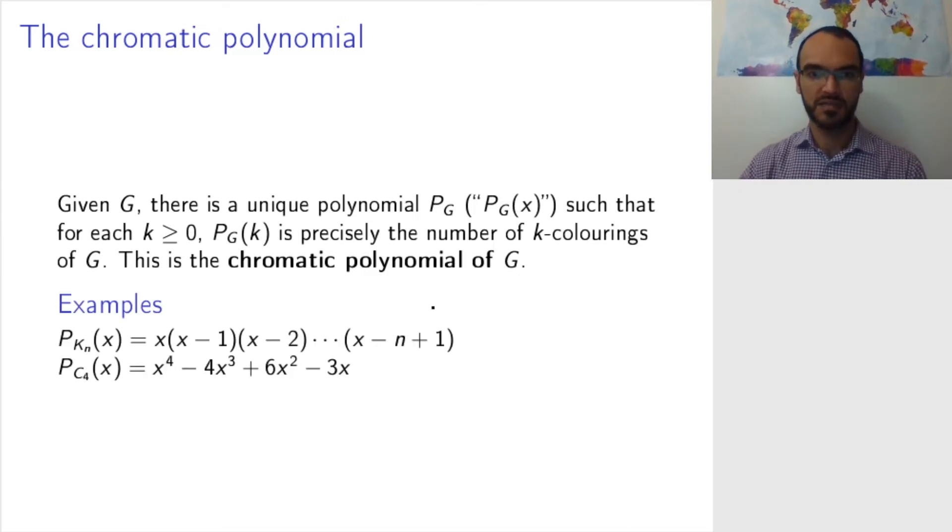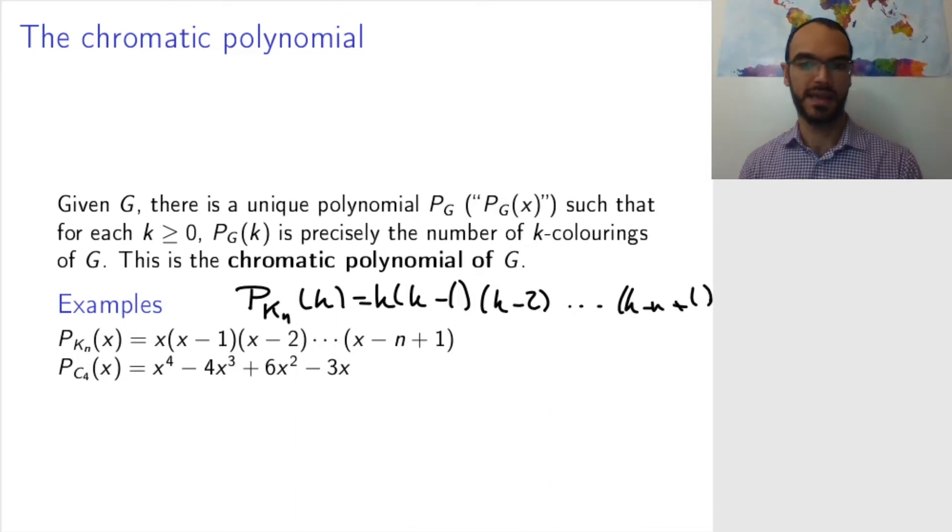now, this is exactly what we had before. Remember, before I told you that P_K_n of k is k times k minus 1, k minus 2, and so on. And now I have just replaced k by x. So, it's now a polynomial that is an abstract polynomial. You can deal with it with any algebraic ways you can, and if you do more advanced things, then algebraic tools will help you get graph theoretic insights.